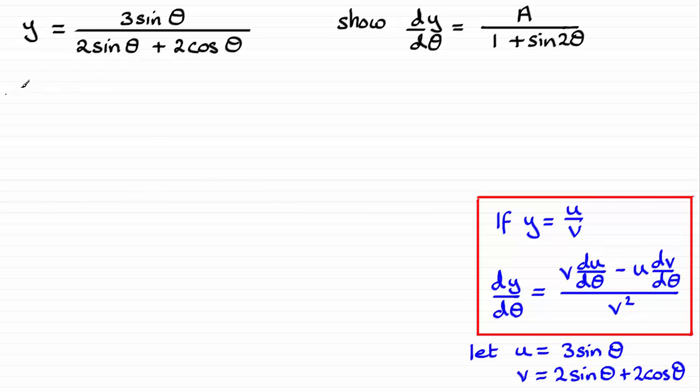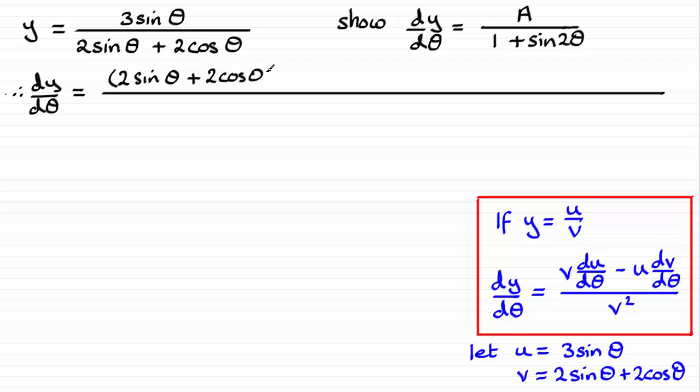So therefore dy by d theta is equal to, and I'll just draw a long division line here. So we've got basically the bottom of the fraction multiplied by the differential of the top, first of all. So if we take the bottom of the fraction, it is 2 sine theta plus 2 cosine theta. And then we multiply this by the differential of the top of the fraction. Differential of sine theta is cosine theta. So we end up with 3 cosine theta there.